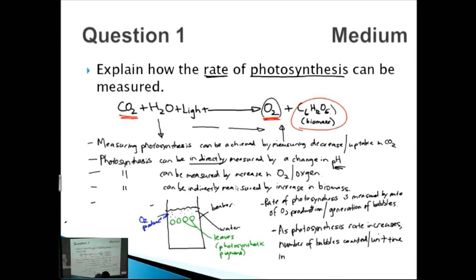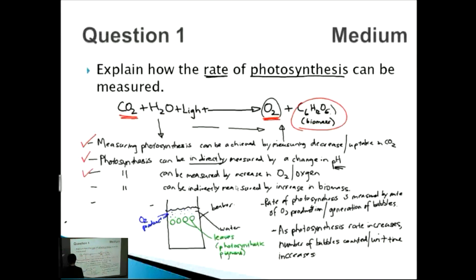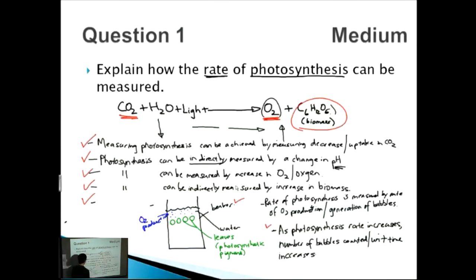Let's count up the points — we're expecting around five to six for a medium question. We've covered: directly measuring by decrease in CO2, indirectly by a change in pH, directly by an increase in oxygen, and indirectly by an increase in biomass. We gave a schematic of the beaker experiment and explained what happens as photosynthesis rate increases. That gives us about five to six marks — our maximum allocation for this question.